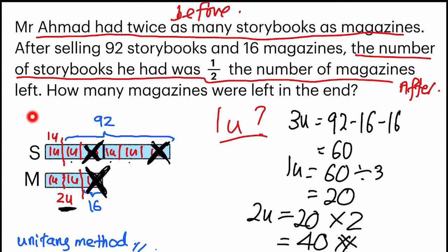Can you see with the help of the model and the unitary method? Unitary method means this. So the most important step is finding one unit. As long as you have found one unit, you can apply it to find whatever they want. They can even ask you how many storybooks Mr. Ahmad had at first or magazines had at first or the total items that he had at first. So that's why I say unitary method is important. It will help you find a lot of the things that they require you to.